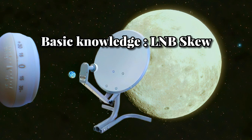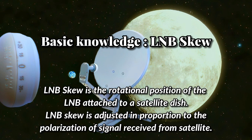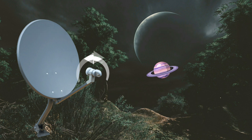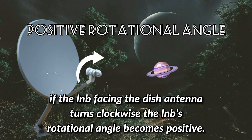Basic knowledge — LNB Skew: LNB skew is the rotational position of the LNB attached to a satellite dish. LNB skew is adjusted in proportion to the polarization of the signal received from the satellite. Negative Rotational Angle: If the LNB, facing the dish antenna, turns anti-clockwise, the LNB's rotational angle becomes negative. Positive Rotational Angle: turning clockwise gives a positive angle.